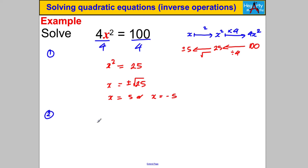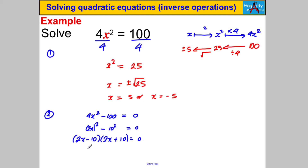I can also verify using difference of two squares: subtracting 100 gives 4x² − 100 = 0, which is (2x)² − 10² = 0, factorizing to (2x − 10)(2x + 10) = 0, giving X = 5 or X = −5 — same answer. Going forward I'll just use inverse operations since they're easier.